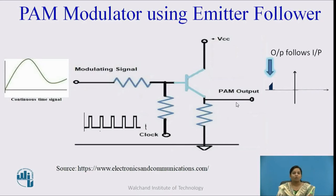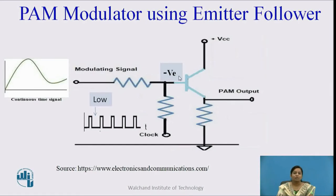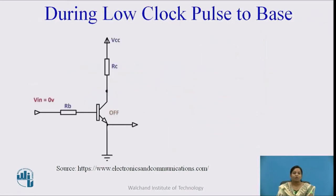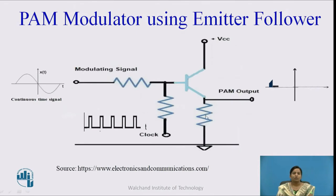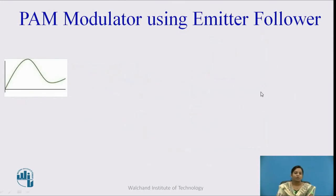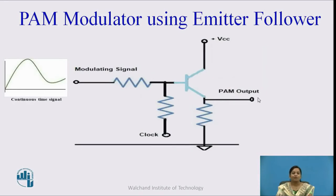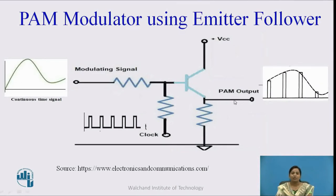When the input signal is a low clock pulse, the negative voltage is applied to the base of the transistor, causing it to work in the cutoff region. When the transistor works in the cutoff region, it acts as an off switch, so the output is zero. In this way, when we give any continuous time signal input to the base and another input — a train of clock pulses — we get a PAM signal across the emitter of the transistor.